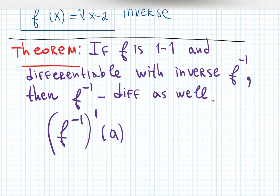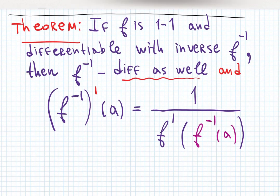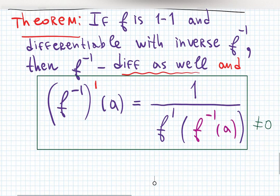This is so f^(-1), the inverse, then prime for derivative. It's differentiable as well and the formula is: the derivative of the inverse function at a is one over the derivative at the inverse at a, of course if the denominator is not zero. This is the formula you'll have to remember.